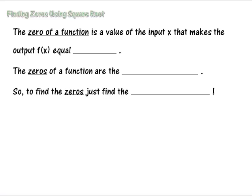Finding zeros using square root. This is the second lesson in our series of using square root to find answers. In the last lesson we found x-intercepts using square root, and in this lesson we're going to find zeros of a function using square root. Let's get ready and get started.